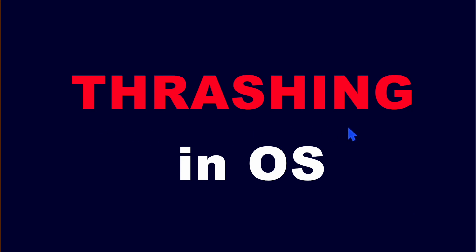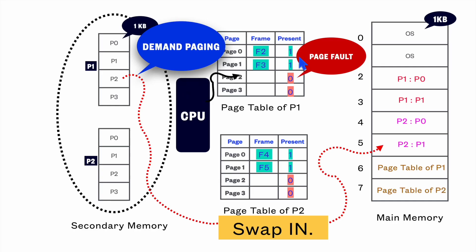What is thrashing in operating system? From the concept of page fault, we are aware that when there is no space in the main memory and the CPU requests a portion of the program,